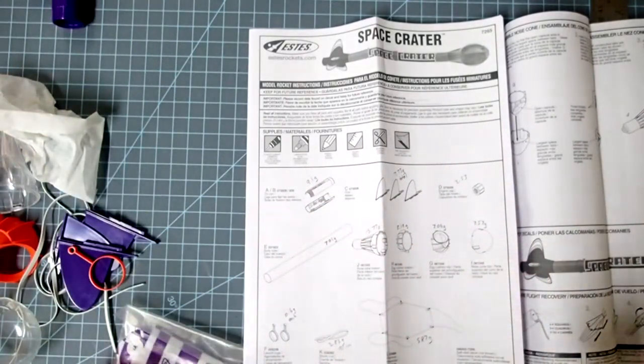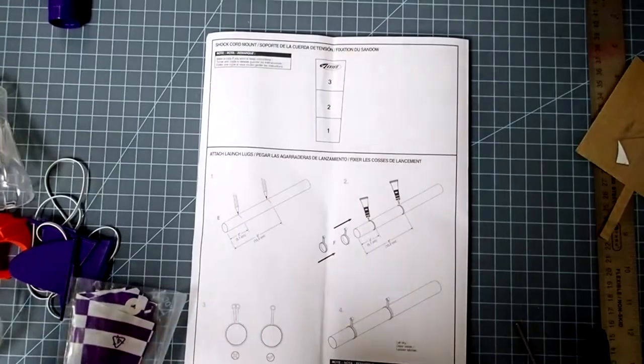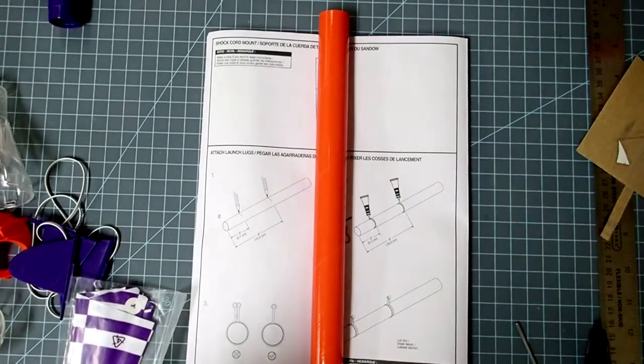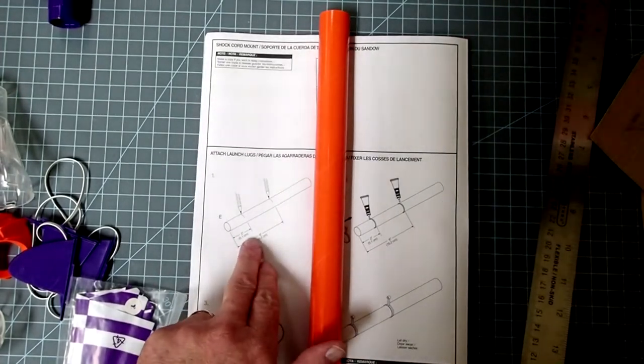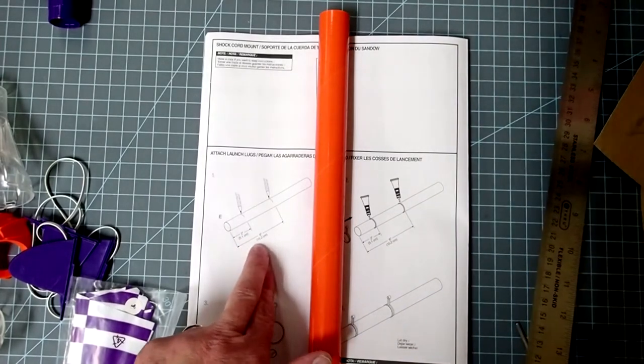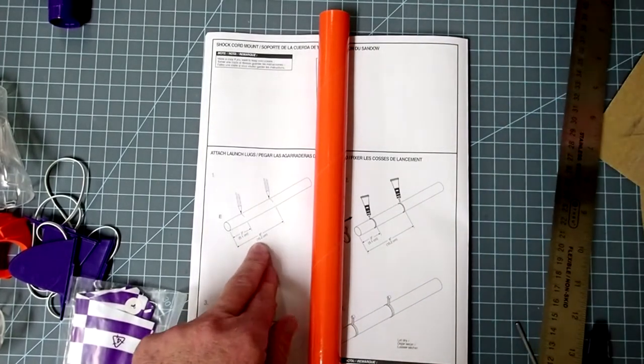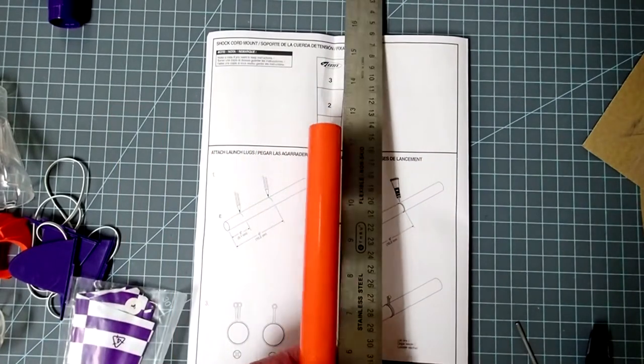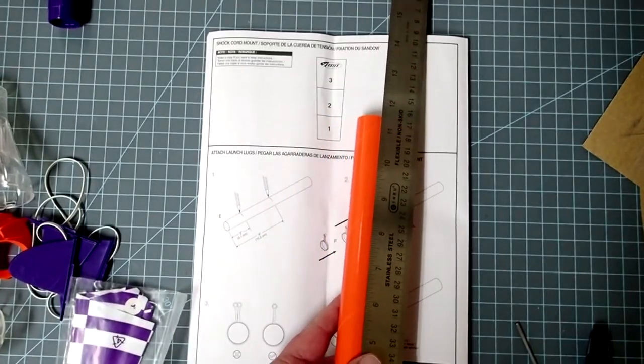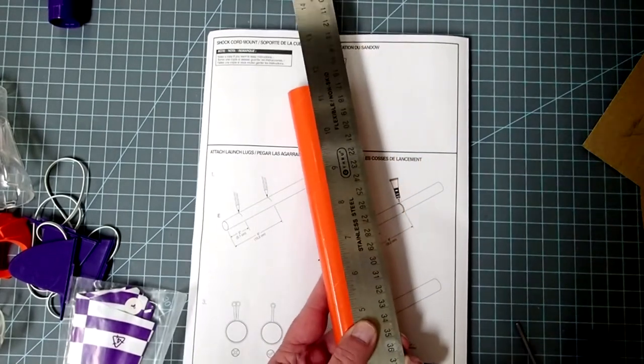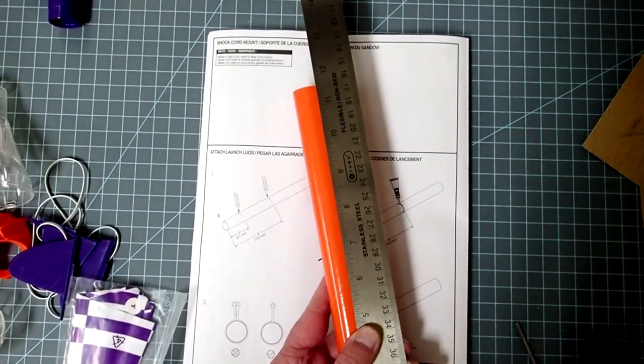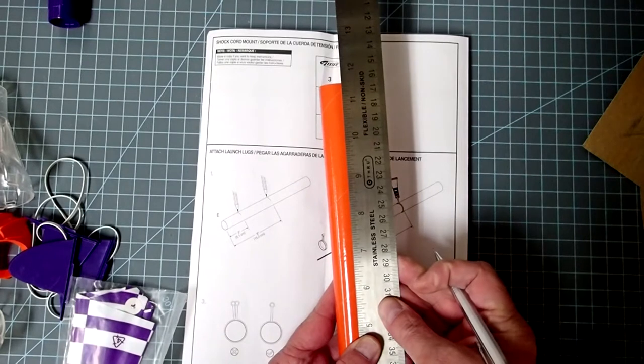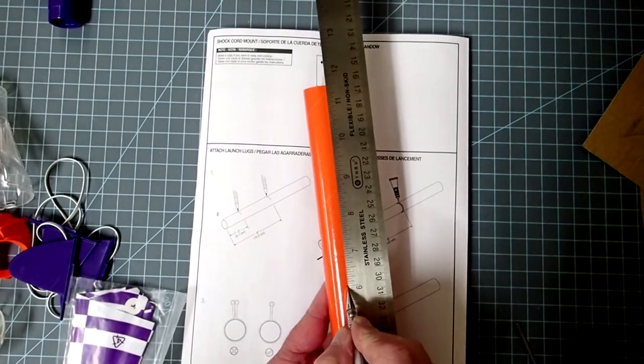And while that's drying, now we can put the launch lugs on. For this next part, we need to mark our body tube. And for this, we need one mark at 2 inches or about 5.1 centimeters. And another one at 6 inches or 15.2 centimeters from the base of the tube. So, I'm just going to flip this around here. Okay, and we'll have one mark here. These don't need to be very large or very dark. One mark here.